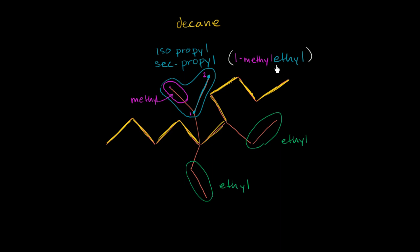Now the systematic name — you might say, why go through the pain of doing this for something so simple that we could just call isopropyl? This is useful if it was a much larger or more complex group attached to the main chain. But more typically, and this is why it's called the common name, you will see this thing just called isopropyl, and sometimes sec-propyl. Now that we've named all of the groups, let's think about what carbons they are attached to and where we start counting from.